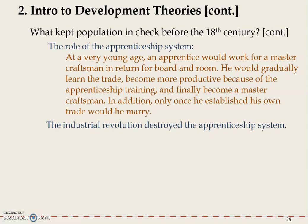Because of that, fewer people would want to stay within the apprenticeship system. The apprenticeship system was important for keeping the population in check because, as we said, you had to spend years learning skills from the master craftsman. So apprentices tended to get married later in their life, which reduced the number of generations born within a given amount of time.